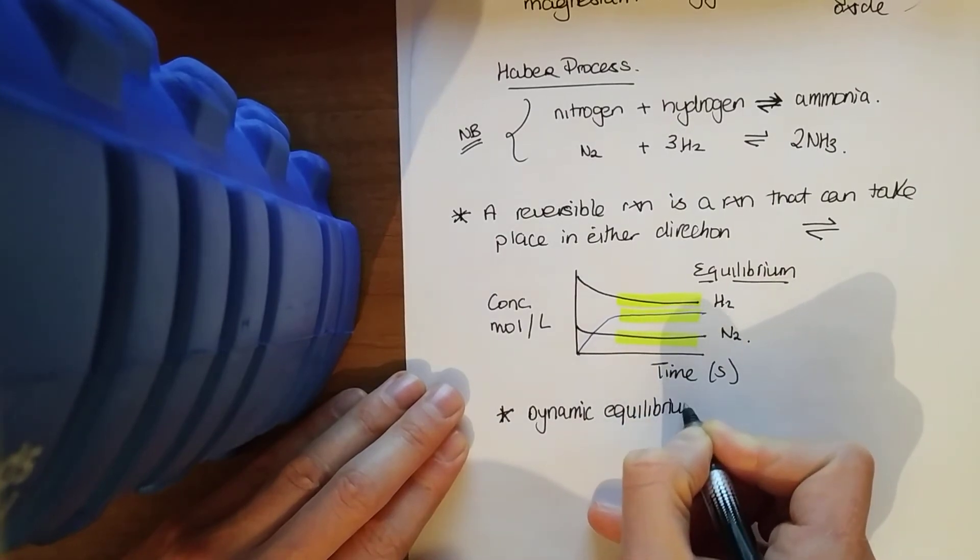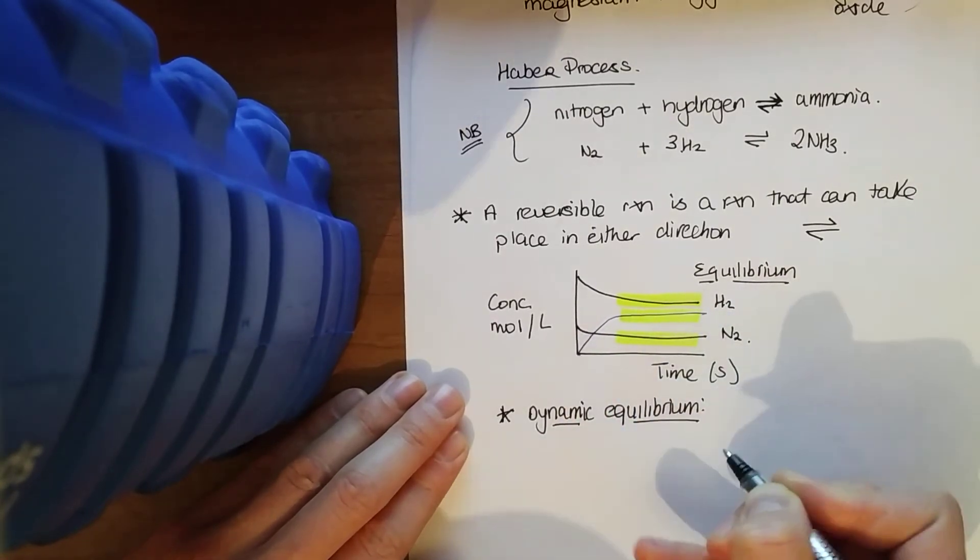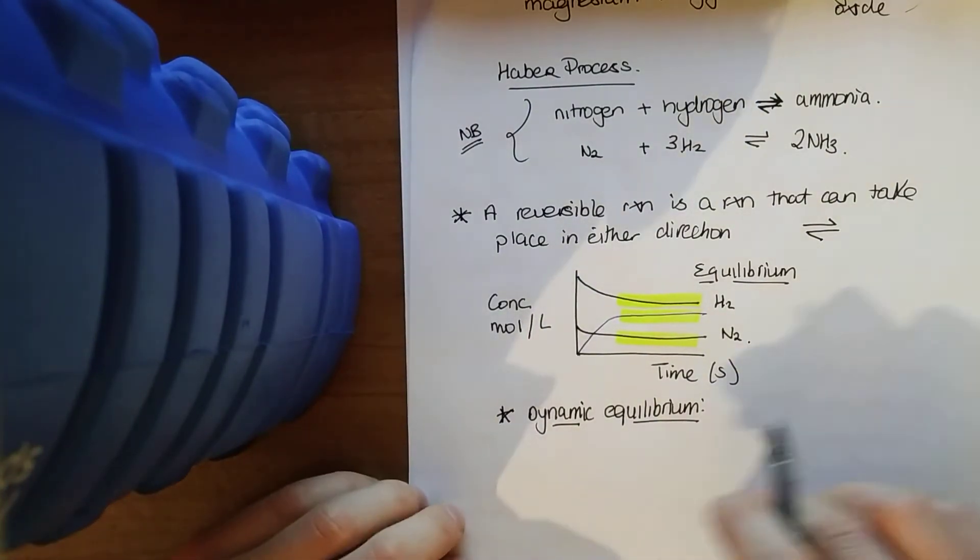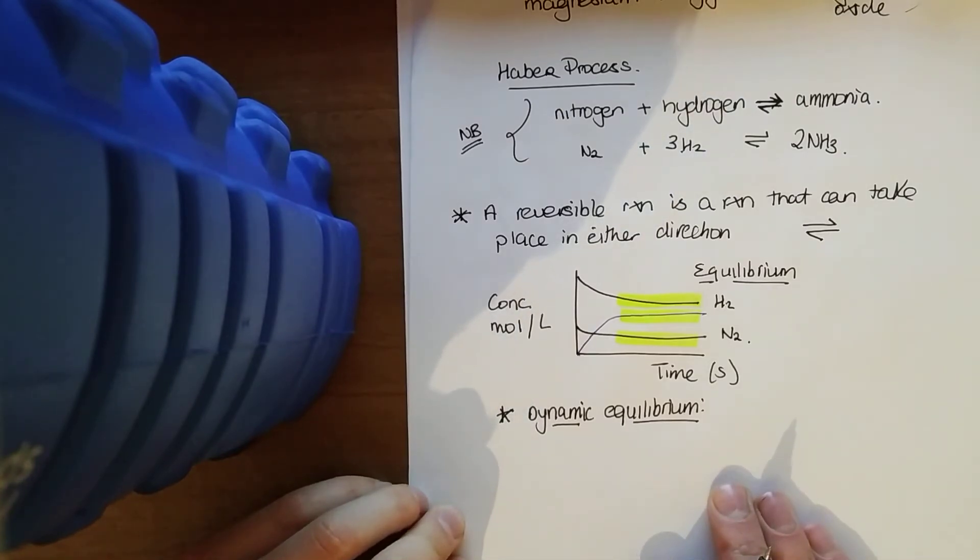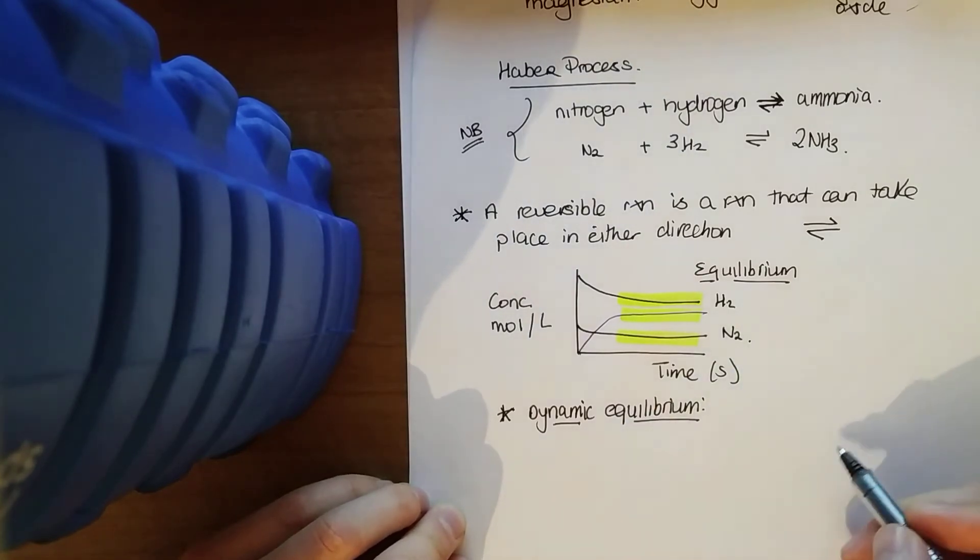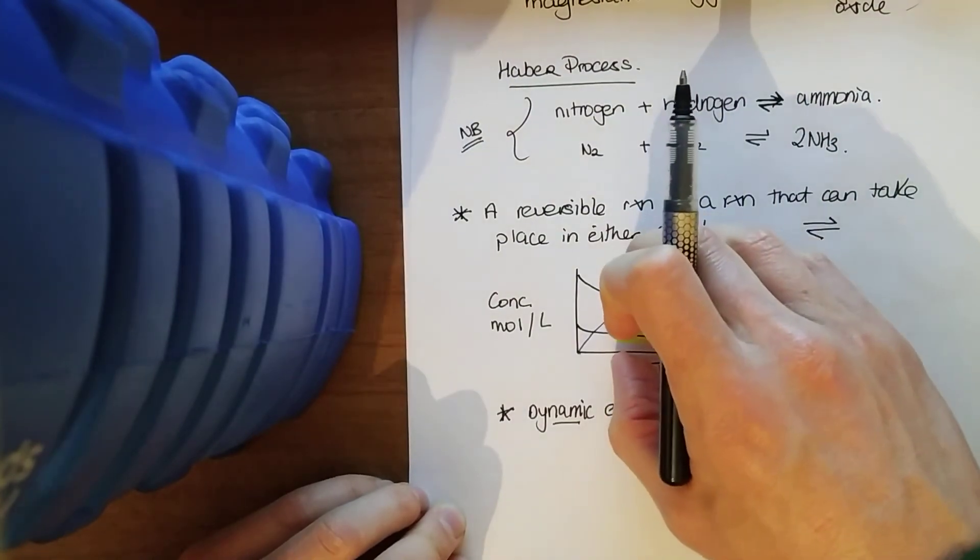Now they often compare dynamic equilibrium with a famous example. They always say it's like a man running a treadmill. When someone's running a treadmill, they're running forward at the same rate as they're running backwards, so their position doesn't change. Or a person going down an escalator. If the person is going down at the same rate as the escalator is going up, then their position doesn't change.